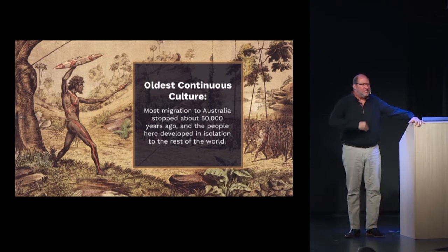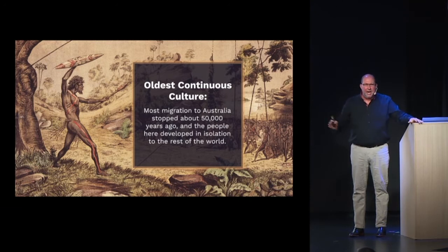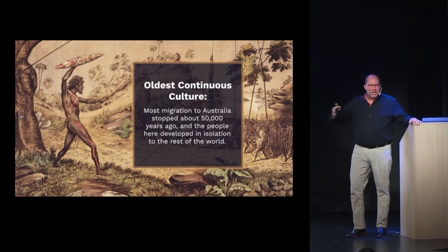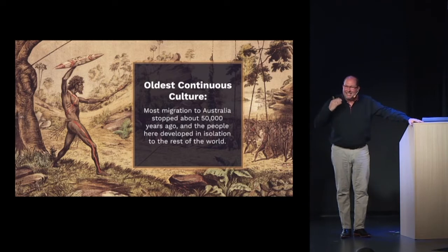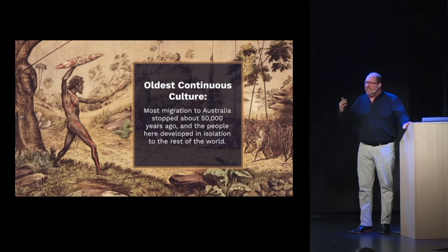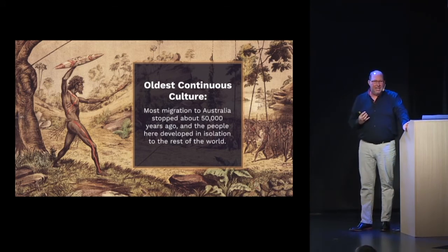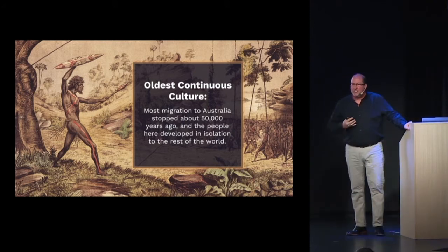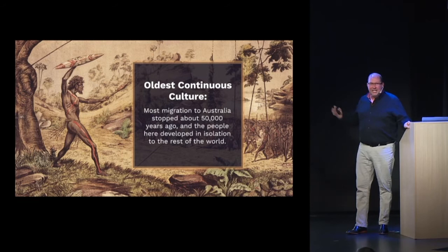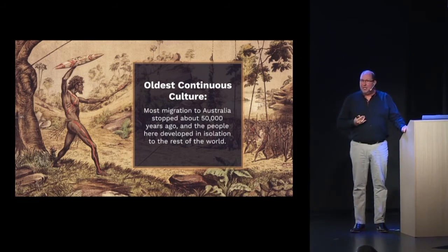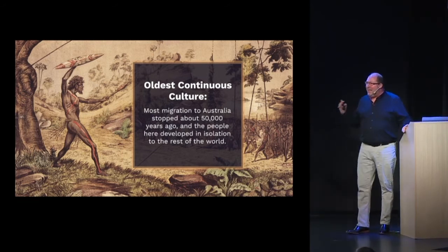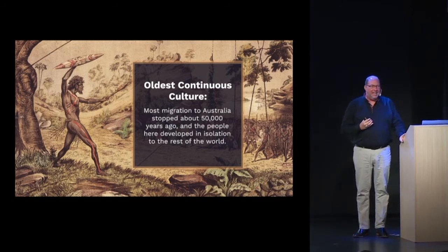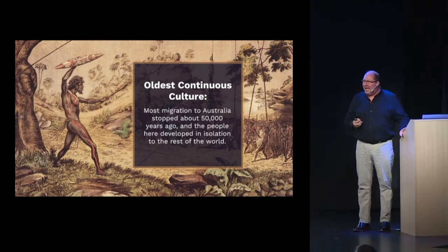Most other places in the world, we see a continuous migration of people out of Africa and across Europe and into Asia. But in Australia, migration stopped 50,000 years ago, and these people developed in isolation. Their culture, their bodies, their entire genetic structures continued to develop according to the land and their needs for a 50,000-year period — and that's what makes this culture such a remarkable study in almost every aspect possible.